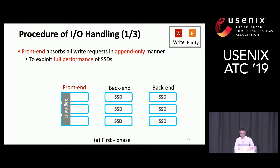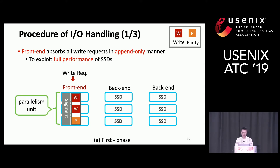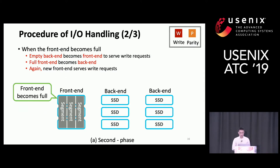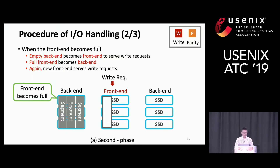Let me give you the procedure of IO handling in more detail. Let's assume one front-end and two back-ends, each consisting of three SSDs. The front-end absorbs all write requests in an append-only manner to exploit the full performance of SSDs. When the front-end becomes full, the next empty back-end becomes the new front-end, and the full front-end becomes a back-end. The new front-end will then handle all write requests.